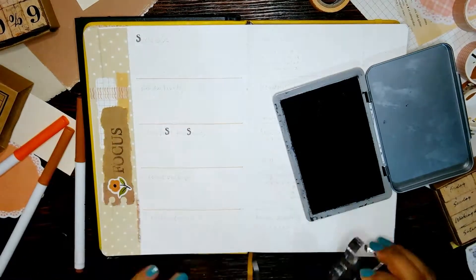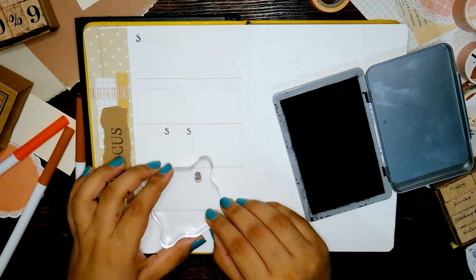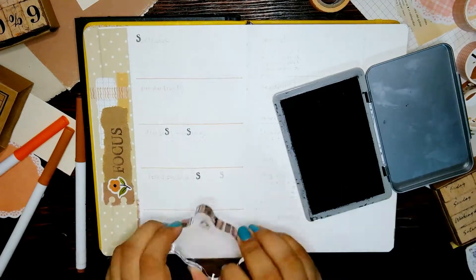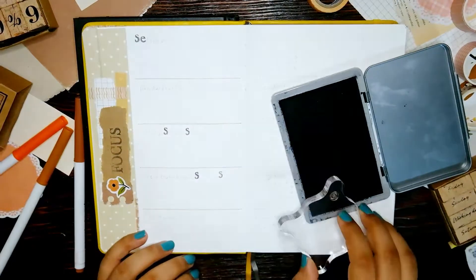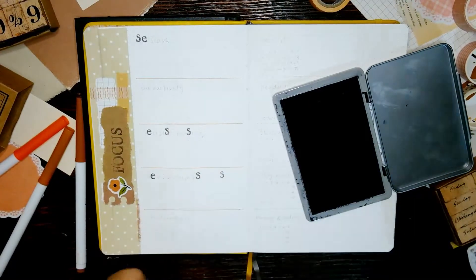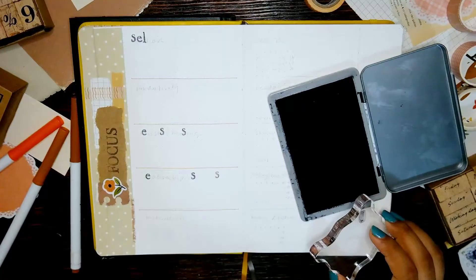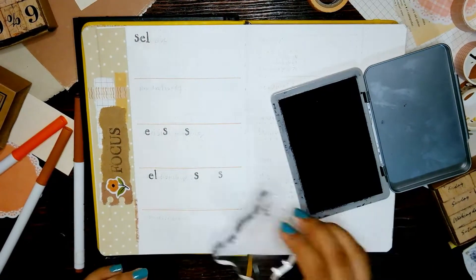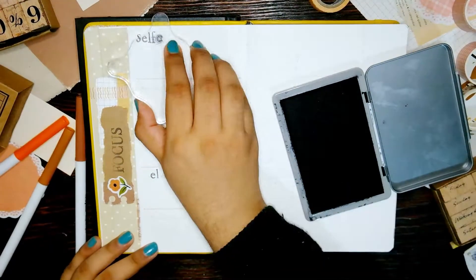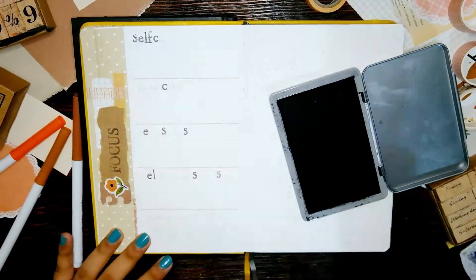The layout is super simple, again I have the header across the length of the left side and then the rest of the spread is divided into five horizontal sections. There's enough space for me to write down at least four priorities and I will fill them in at another time.